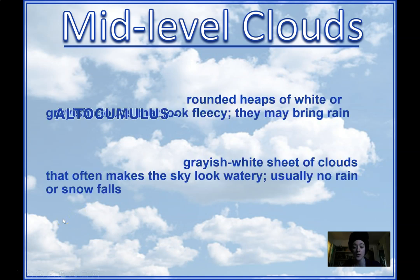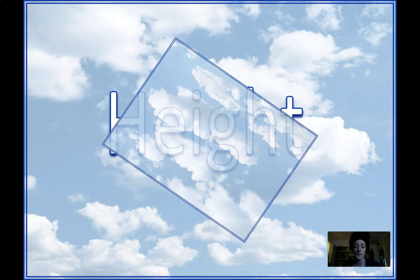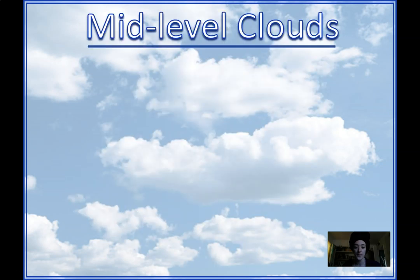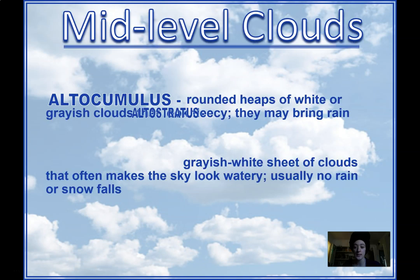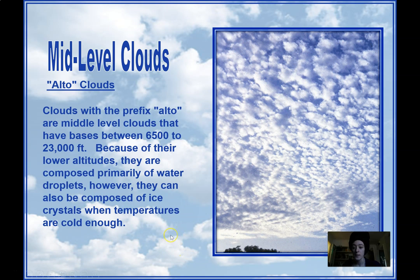Now we have our mid-level clouds, which will have that prefix alto. So alto-cumulus clouds or alto-stratus clouds — the prefix tells you the height, these are medium level clouds, and the second word tells you the shape. So we've got either alto-cumulus or alto-stratus. These are our two medium level clouds, found between 6,500 feet and all the way up to 23,000 feet. They're mostly water, sometimes ice.